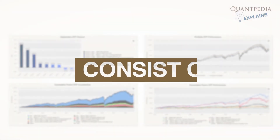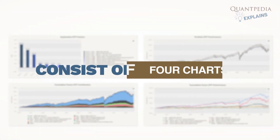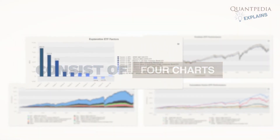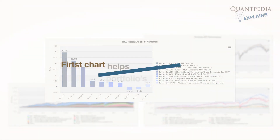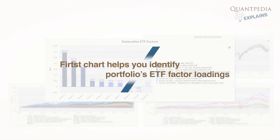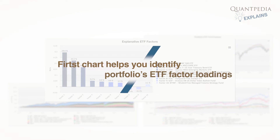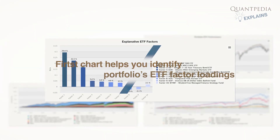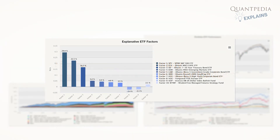The report consists of four charts. The first chart helps you identify your portfolio's ETF factor loadings for deeper insight into the primary risk and investment exposures.